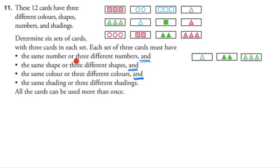That first green set has three different numbers of objects, all the same shape as triangles, all the same color as green, and three different shadings — clear, solid, and striped. Moving to the blue cards: all the same color, three different shapes, three different numbers of objects, and three cards that are all clear, so all the same shading. This is another valid set.